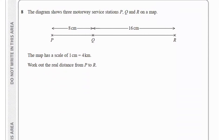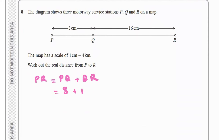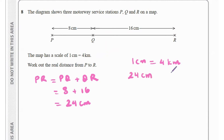Question 8: the diagram shows three motorway service stations P, Q, and R on a map with a scale of 1 cm equals 4 km. To find the real distance from P to R, we first find P to R as the sum of PQ and QR: 8 plus 16 equals 24 centimetres. Since 1 cm equals 4 km, 24 cm equals 24 times 4, which is 96 kilometres.